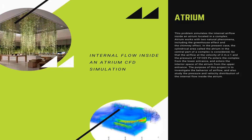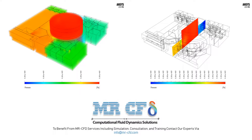Also, we go into an internal flow inside an atrium CFD simulation. This problem simulates the internal airflow inside an atrium located in a complex. The atrium works with two natural phenomena including the greenhouse effect and the chimney effect. The cylindrical atrium in the central part of the complex is considered, where airflow at a velocity of 2 meters per second and atmospheric pressure enters the complex from the lower entrance and enters the interior of the atrium from the upper entrance. The purpose is to investigate the behavior of airflow and the pressure and velocity distribution of the internal flow inside the atrium.